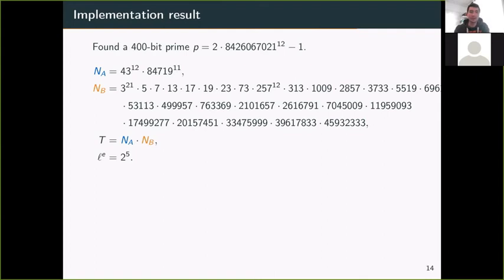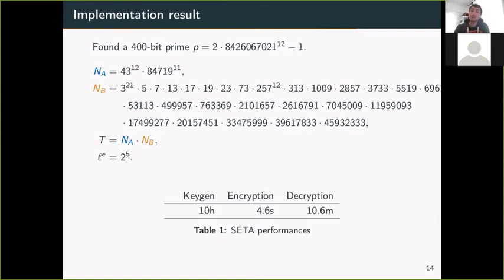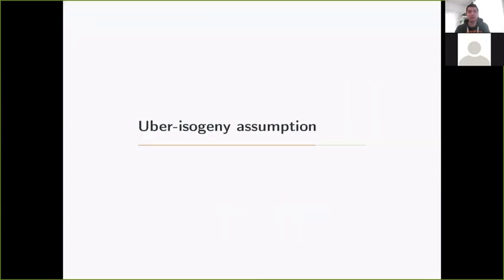With that in mind, we made an implementation in C, and we get that key generation takes 10 hours, encryption takes 4.6 seconds on average, and decryption is 10.6 minutes on average. That will conclude this brief introduction of our implementation, and I'll switch to the last part of the talk, which is about the uber isogeny assumption.